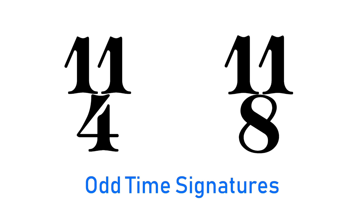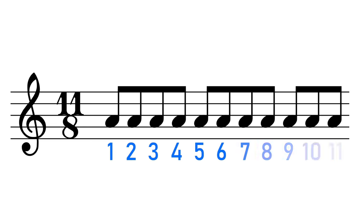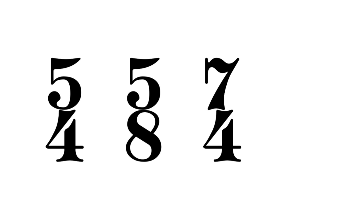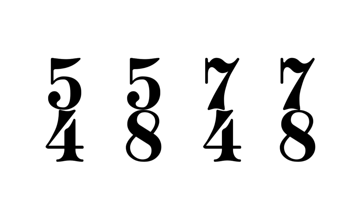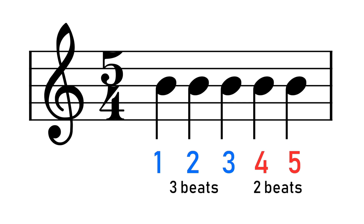11/4 and 11/8 are examples of odd or complex time signatures. A time signature is considered odd if the number of beats — the top number — can't be divided into either 2 or 3. 5/4, 5/8, 7/4, and 7/8 are also examples of odd time signatures. Because the number of beats can't divide equally into 2 or 3, we have this unequal subdivision, giving odd meters a lopsided, off-balance sound.